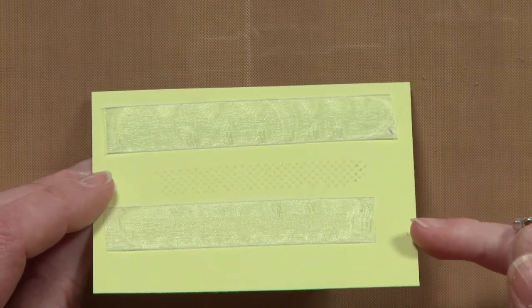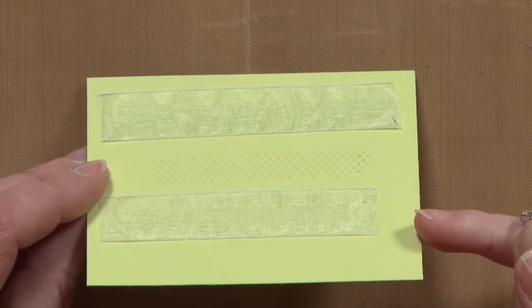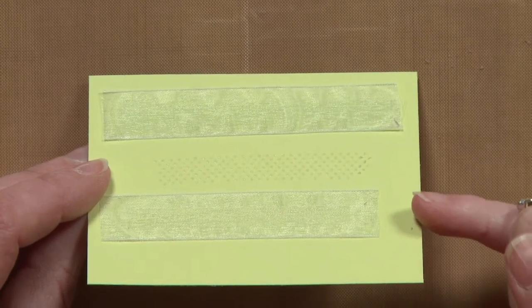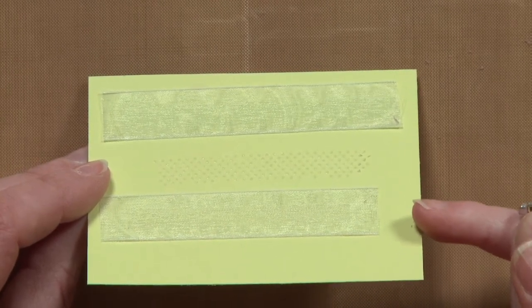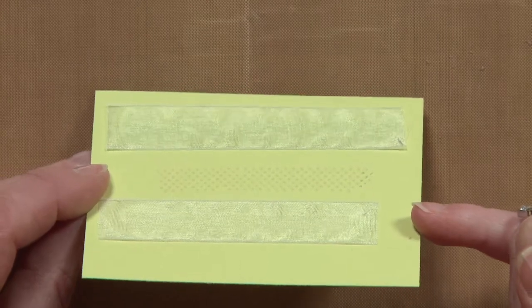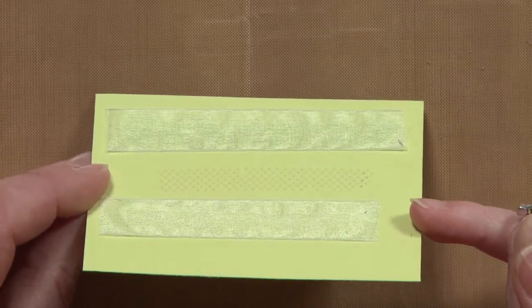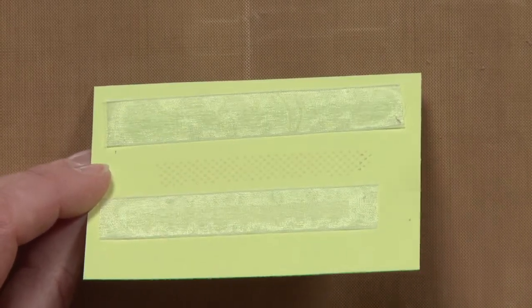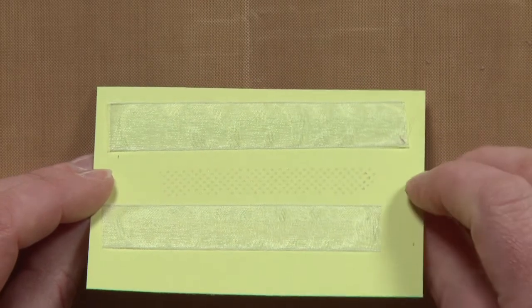With this top one the sheer ribbon has been adhered with SuperTac Double Stick Adhesive. And if you look very closely here you can see a thin strip there which you may not want to see underneath your sheer ribbon.